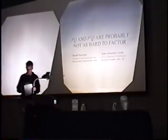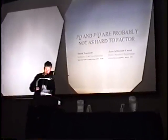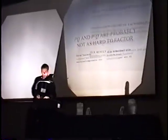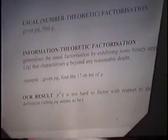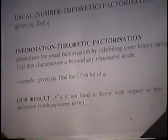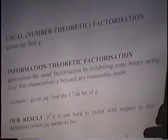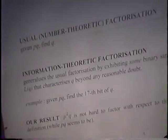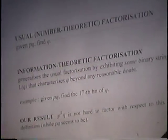And so we can define a new notion of factorization, we call it information theoretic factorization, which generalizes the usual factorization by exhibiting some binary string, L(Q) of one factor Q, that directly reveals this factor beyond any reasonable doubt.